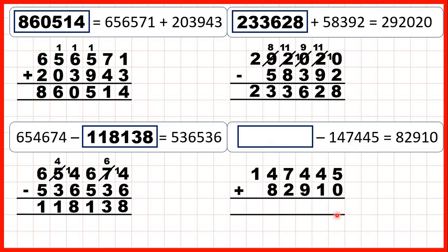5 plus 0 is 5, 4 plus 1 is 5, 4 plus 9 is 13, so 1, 3. 1 plus 7 plus 2 is 10, so 1, 0. 1 plus 4 plus 8 is 13, so 1, 3, and 1 plus 1 is 2, so our missing number must be 230,355.